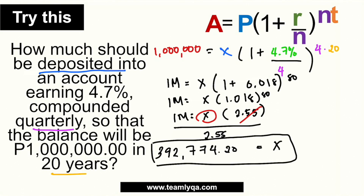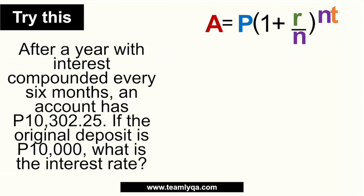It's a little bit trickier when the unknown is R, N, or T, because it becomes more complex — which is kind of what happened in our challenge question. Number 3 says: after a year with interest compounded every 6 months, so twice a year, an account has 10,302.25 pesos. If the original deposit is 10,000, what is the interest rate? The interest rate is what we're looking for.